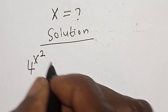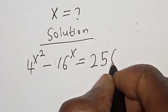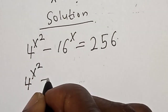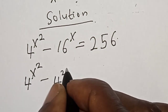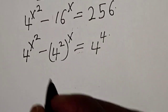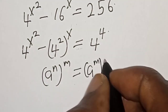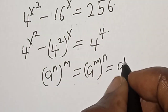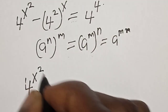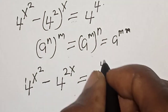4 raised to power s squared minus 16 raised to power s is equal to 256. We rewrite 16 as 4 squared, so 16 raised to power s becomes 4 squared raised to power s. And 256 is 4 raised to power 4. Using the rule that a raised to power m raised to power n equals a raised to power mn, we get 4 raised to power s squared minus 4 raised to power 2s equals 4 raised to power 4.